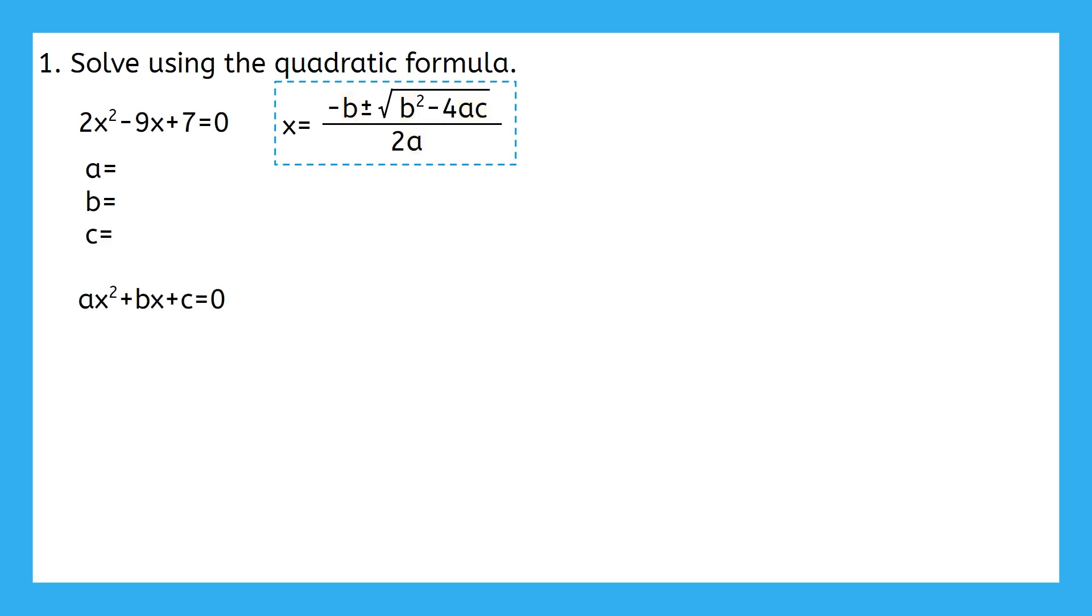Well, the standard form of a quadratic equation is ax squared plus bx plus c equals 0. a is the coefficient of the x squared term, b is the coefficient of the x term, and c is the constant. Using this knowledge, can you identify what values we should use for a, b, and c from our original equation?